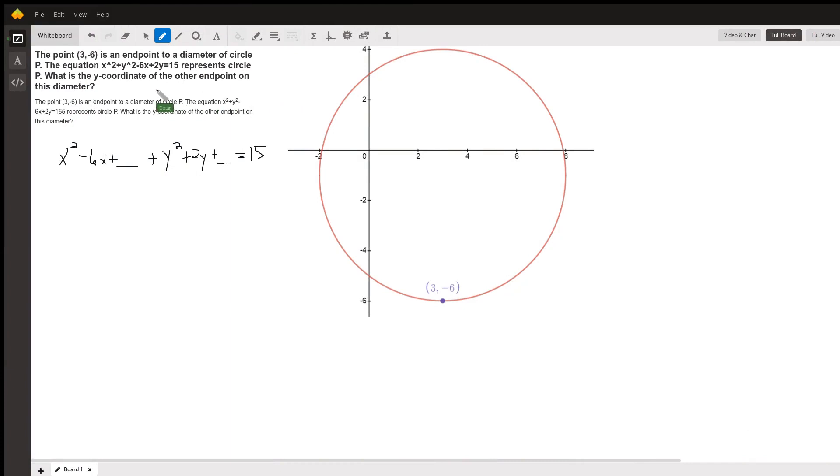Here's a graph of the circle using this equation right here. The point 3, negative 6 is on the circle.